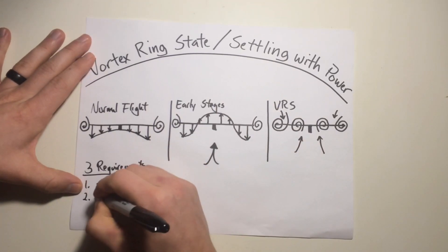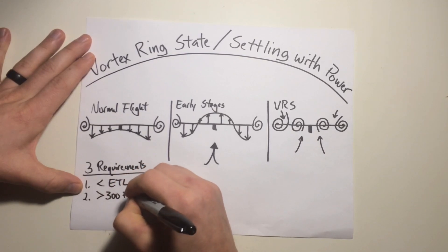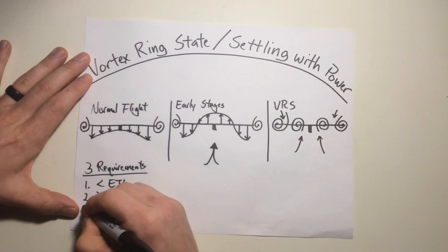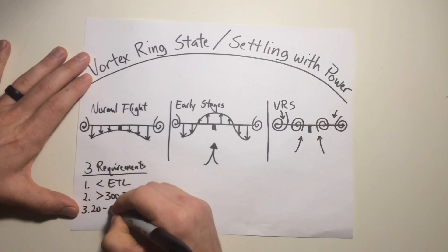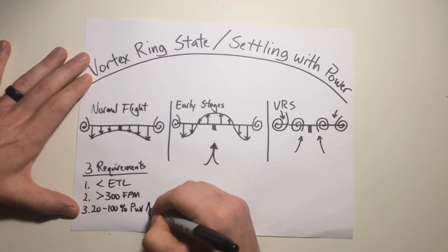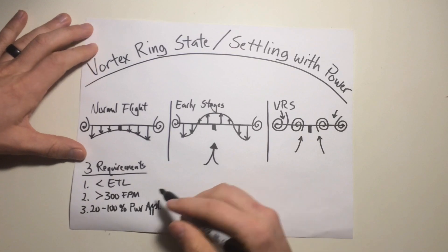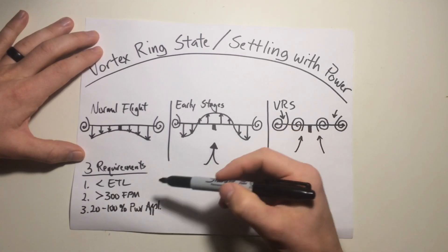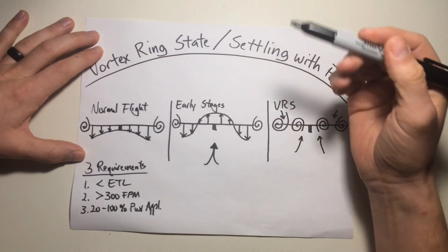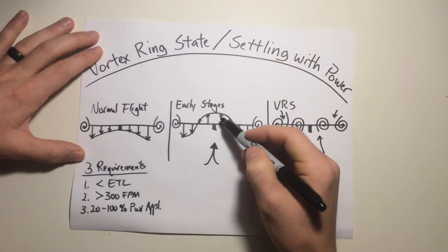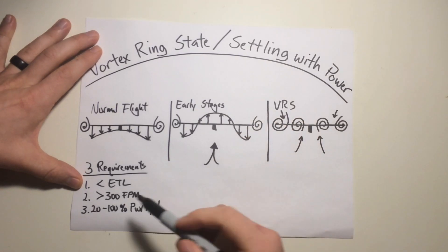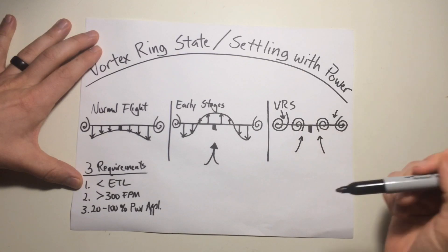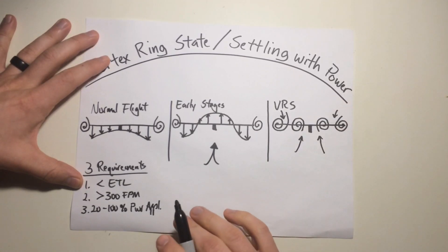Number two is going to be a rate of descent greater than 300 feet per minute, and this is just going to be a condition conducive to an upwards flow of air that could potentially form these vortices. Number three is going to be 20% to 100% of available power applied, usually with insufficient power to arrest the descent. That's just saying you have power applied — it's not a full-on autorotation. In an autorotative state, it's only an upwards flow of air through the rotor system; you're not going to have a difference of downflow and upflow.